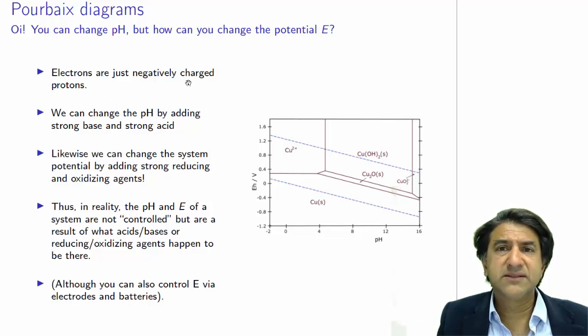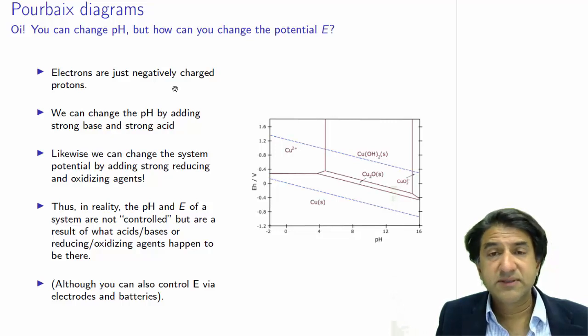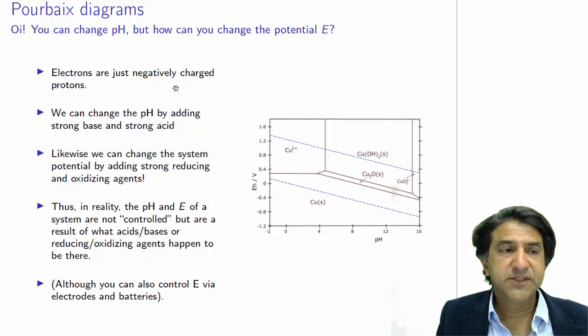Electrons are just negatively charged protons, so why not? The electrons are in the solution. You can introduce them by an electrode, or by an oxidizing or reducing agent. You can add them or remove them, just like we can add hydrogen ions into solution by adding strong bases and strong acids.